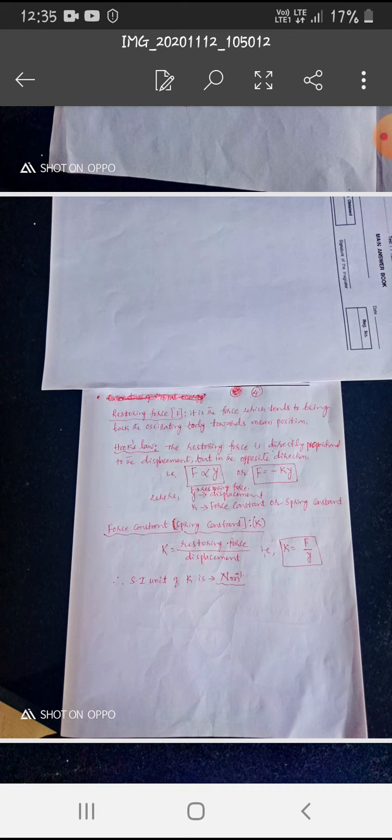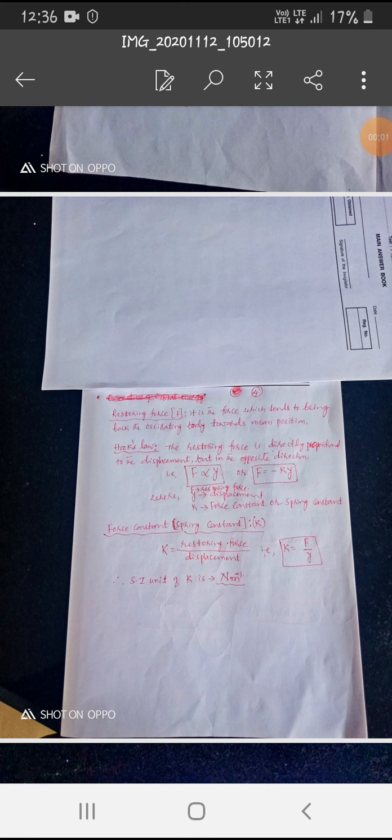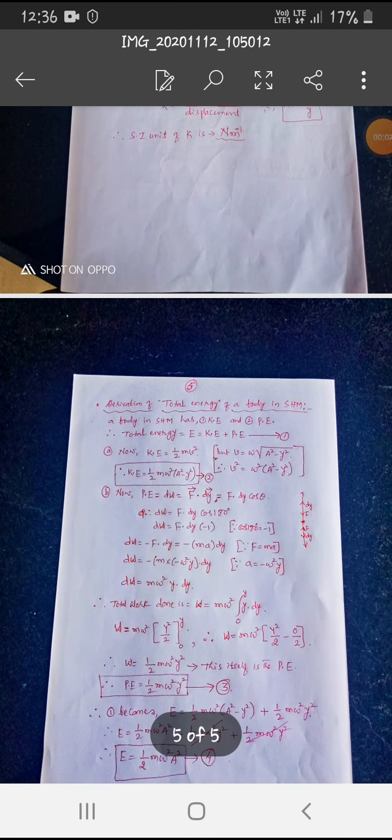And Hooke's law says that the restoring force is directly proportional to the displacement, but it is opposite to the direction. So if we can write, F is directly proportional to the Y, or F is equal to minus K by Y. Y is the displacement, and K is the force constant. K is equal to the restoring force by displacement.